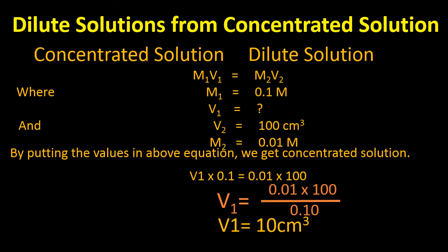To prepare dilute solutions from concentrated solutions, memorize this simple formula: M1V1 = M2V2. Here M1 represents the molarity of the concentrated or standard solution — in our case, 0.1 molar potassium permanganate. M2 is the molarity of the solution we want to prepare — 0.01 molar. Before preparing, we should know what we want to prepare and in how much amount.